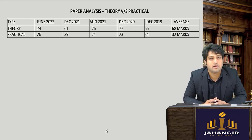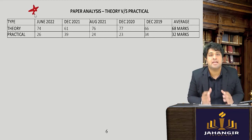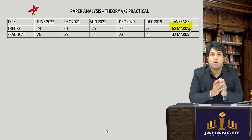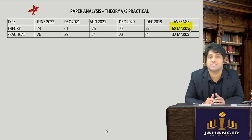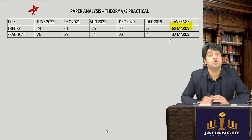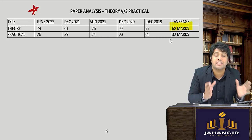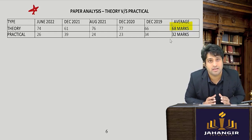Pay close attention to the CMA strategy: around 70 marks in the CMA paper come as pure theory — from theory chapters as well as practical chapters where theory is also asked. Only approximately 30–32 marks involve actual sum solving requiring a calculator. So while studying, keep in mind that you can clear the paper and get an exemption if you study all the theory thoroughly.